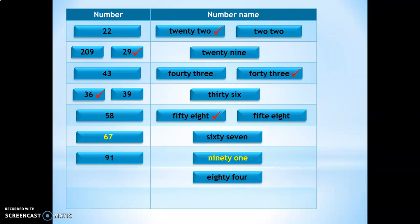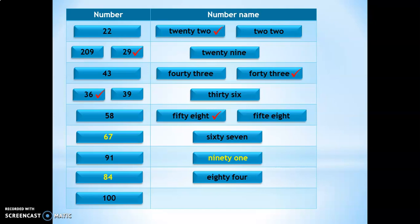One more example. What is the number corresponding to the number name EIGHTY FOUR? The answer is 84. And the last one — what is the number name corresponding to 100? It is ONE HUNDRED, 100.